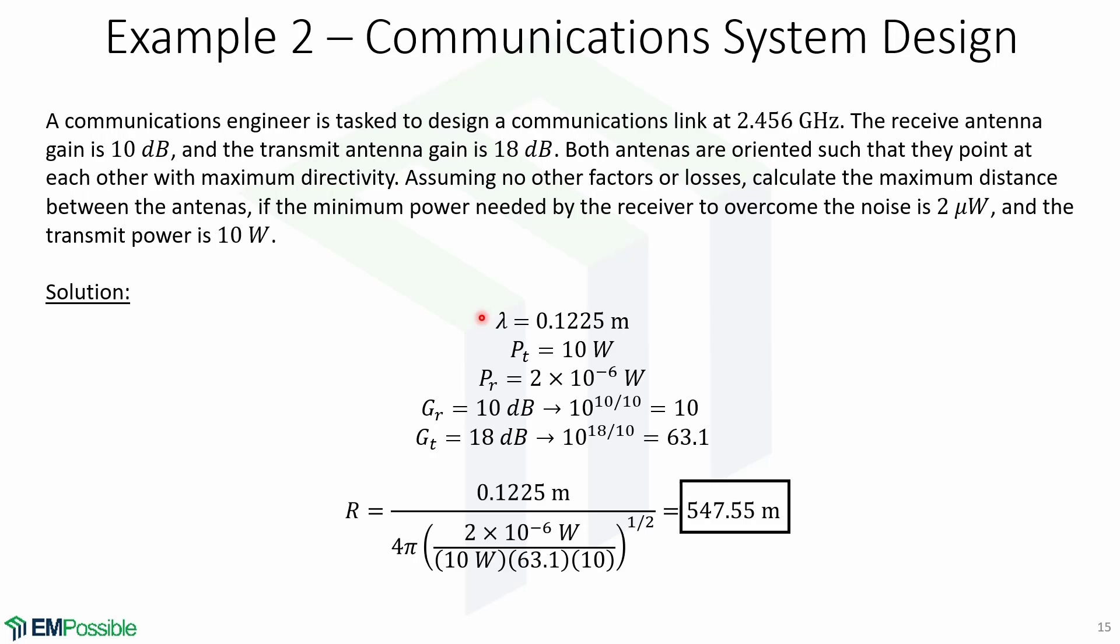Now let's group all the terms for the Friis transmission equation. Lambda equals this value. PT equals 10 watts. PR equals 2 × 10^(-6) watts. GR equals 10 dB, or converted to linear scale equals 10, and GT equals 18 dB, or in linear scale 63.1. Now plugging everything in the formula to find R, we get that the maximum distance is given by 547.55 meters.